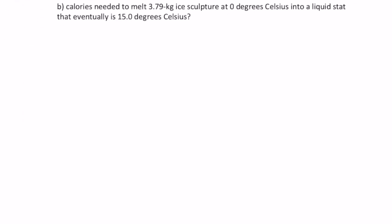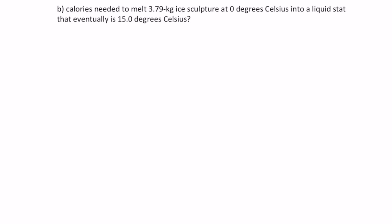So, for B, calories needed to melt 3.79 kilograms ice sculpture at 0 degrees Celsius into a liquid state that eventually is 15 degrees Celsius. So, ask yourself what's going on here. The question is asking us, what is going to happen when this sculpture starts to melt? So, we should already know that heat is being absorbed to do what? To make that sculpture melt into water. So, circle everything that you need, like I just did.